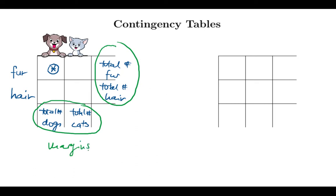The mathematical problem I want to discuss is the following. If you give me a contingency table — let's say a two by two table — and the only thing you tell me are the margins, my question is: how many contingency tables are there that give you these given margins?